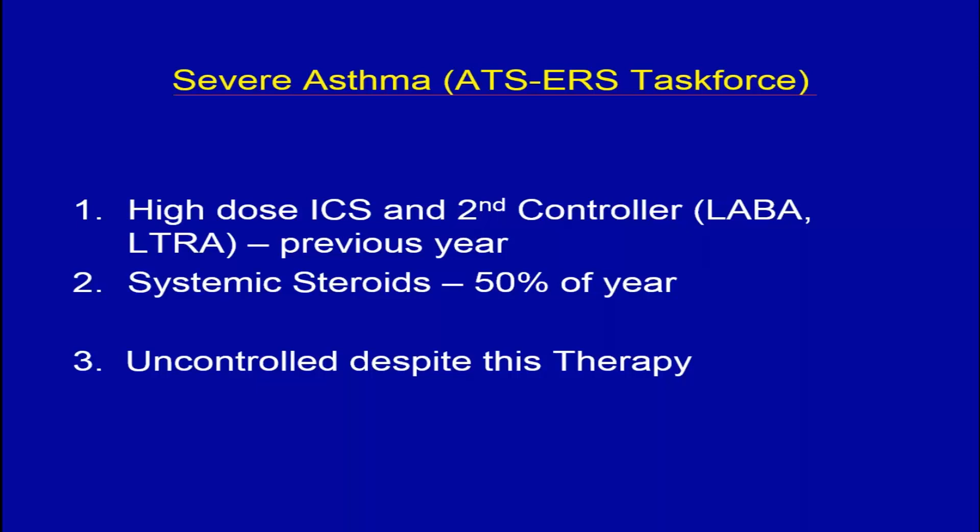About two to three years ago, an ATS-ERS task force defined severe asthma with three criteria: if you were on high-dose inhaled corticosteroids and a second controller — either a long-acting beta agonist or a leukotriene receptor antagonist — for the previous year but still had symptoms, you potentially have severe asthma. If you have had systemic steroids, either enough steroid bursts or being on daily oral steroids for about 50% of the year, you're also in the severe asthma category.